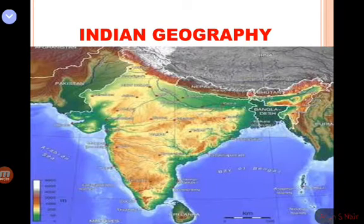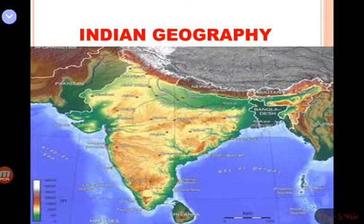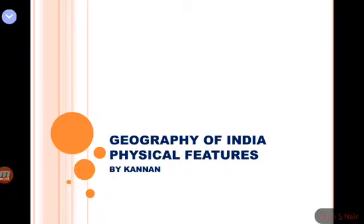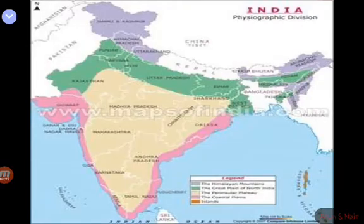The Indian desert lies towards the western margin of the Aravalli Hills and it is called the Thar Desert. We are going to talk about the Thar Desert.